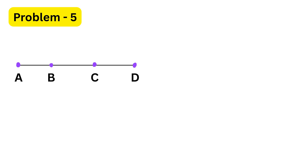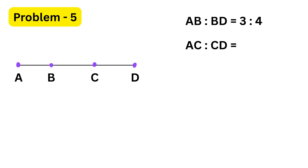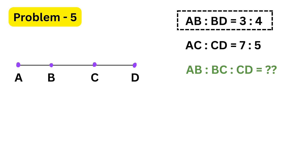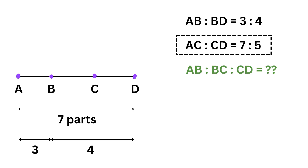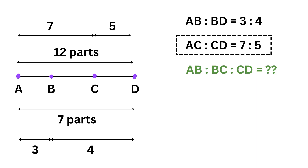Now let us solve one final problem. We are told that points A, B, C, and D are all on the same straight line. The ratio of AB to BD is three to four, and the ratio of AC to CD is seven to five. We are asked to find the ratio of AB to BC to CD. The first ratio, AB to BD equals three to four, tells us AB is three parts and BD is four parts of the segment from A to D. The second ratio, AC to CD equals seven to five, tells us AC is seven parts and CD is five parts.